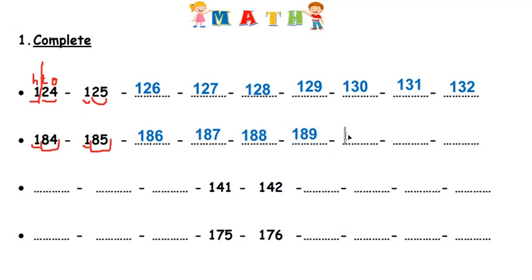After eighty-nine it's ninety, so I write one hundred ninety. After ninety it's ninety-one, so it's one hundred ninety-one. And then one hundred ninety-two.